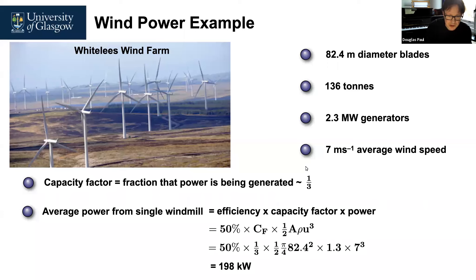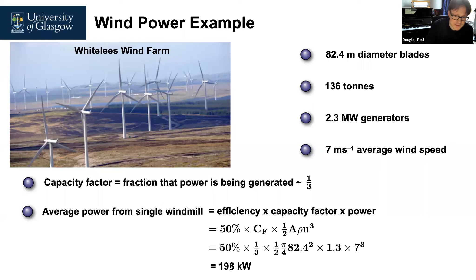Students sometimes get confused because Siemens and other manufacturers quote generators at 2.3 megawatts. But you have to look at the capacity factor, the efficiency for local wind conditions, and the average wind speeds to see what you'll actually deliver on average at a particular site. At some times when the wind is stronger, you'll get much closer to 2.3 megawatts — that's the maximum. But there are also times when the wind doesn't blow. So 198 kilowatts is the average generating power over a whole year.